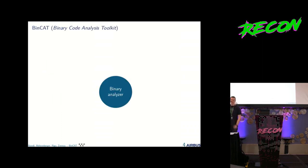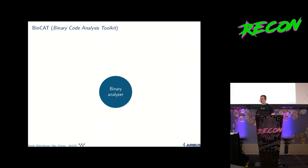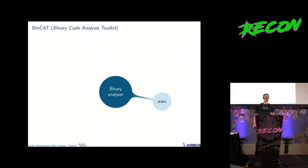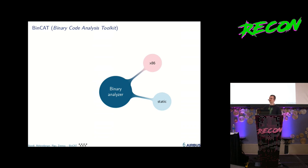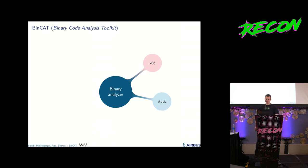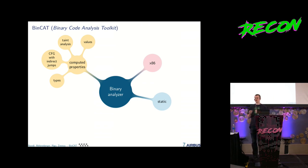Bincat is a binary analyzer. The goal is to analyze binary code — programs for different architectures. The main point is that it's a static analyzer, so at no point are you going to run actual code from the binary on the CPU. Everything will be done by the analyzer and you will not be attacked by the code directly. For now we support x86 32-bit.